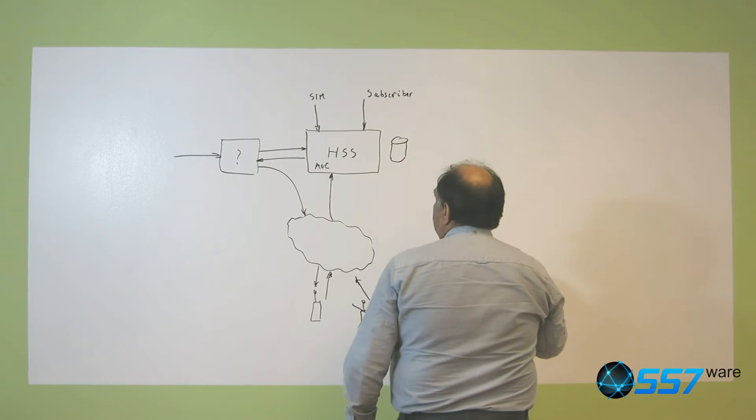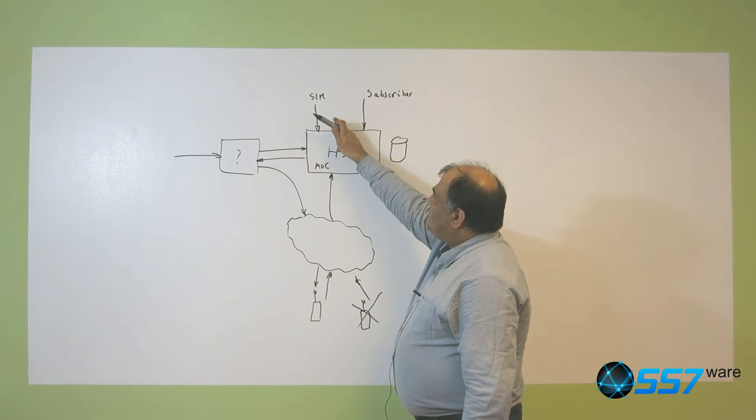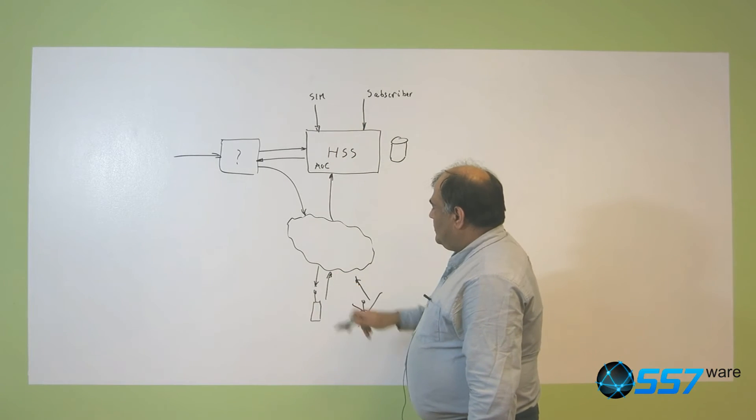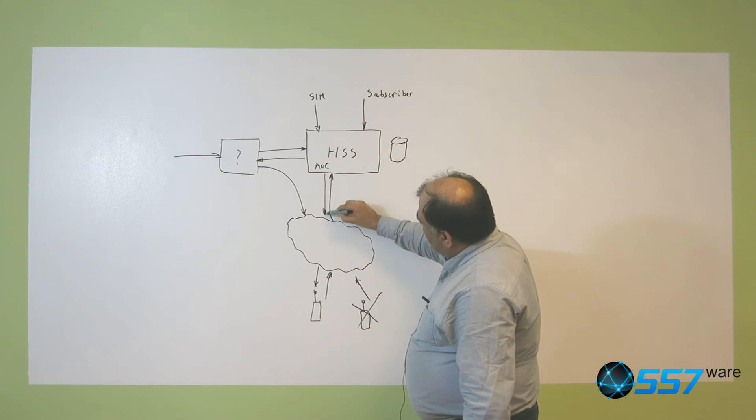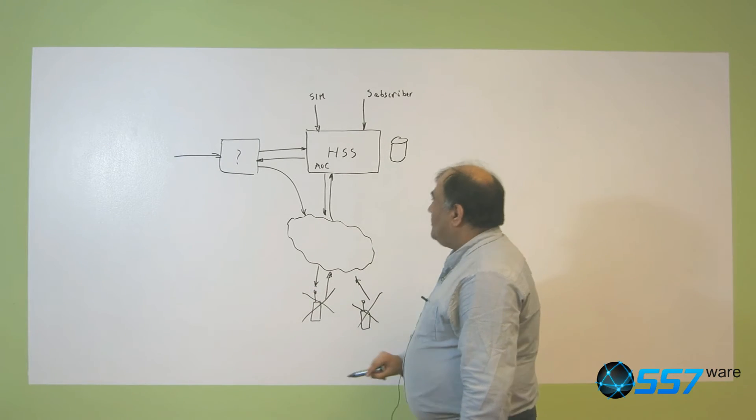Whenever a subscriber would be deactivated, for example, the provisioning would send a message to wherever the subscriber is so that the service is terminated there.